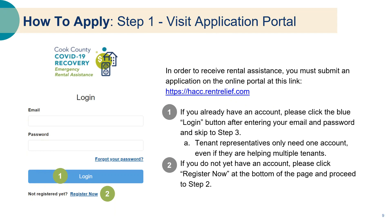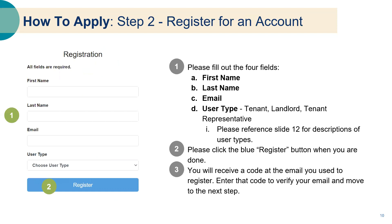Step one: visit the application portal. If you already have an account, please click the blue login button after entering your email and password and skip to step three. Tenant representatives only need one account, even if they are helping multiple tenants. If you do not yet have an account, please click register now at the bottom of the page and proceed to step two.